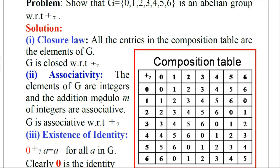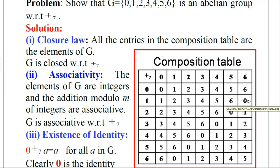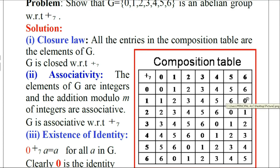Let us consider the second row, the row headed by the number 1. So 1+0=1, 1+1=2, 1+2=3, 1+3=4, 1+4=5, 1+5=6. For 1+6: because it is addition modulo 7, 1+6=7. When 7 is divided by 7, the remainder is 0. Therefore we write 0 here. If the number equals or exceeds 7, we write the remainder.